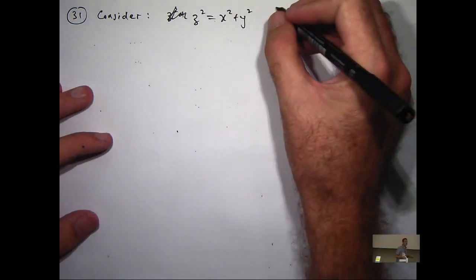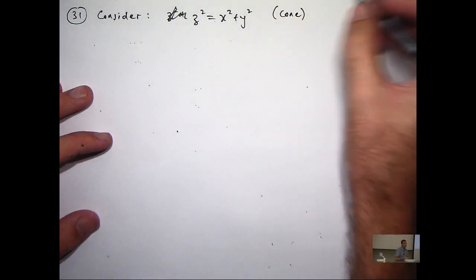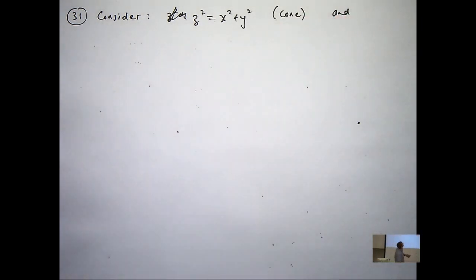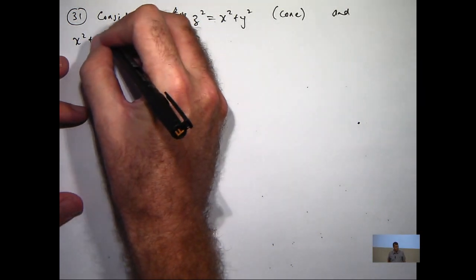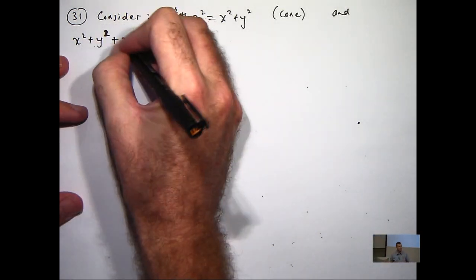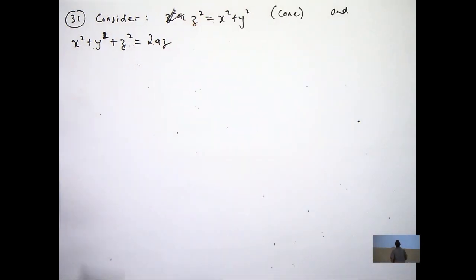So this is a cone, and x squared plus y squared plus z squared equals 2az. Now here, a is a positive constant.